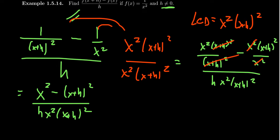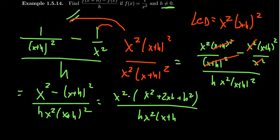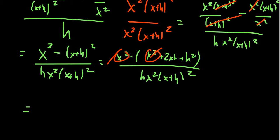Now we're going to FOIL the (x+h)² in the numerator because you'll notice it's no longer in a denominator. If you multiply out (x+h)², you'll end up with [x² - (x² + 2xh + h²)]/[hx²(x+h)²]. You'll notice as you distribute that negative sign, there's now an x² and a negative x² that cancel out. You're going to have -2xh - h².